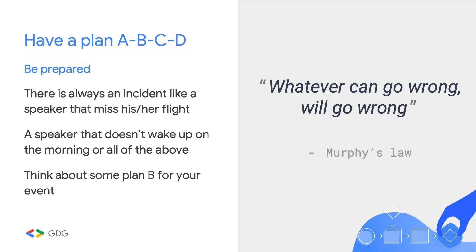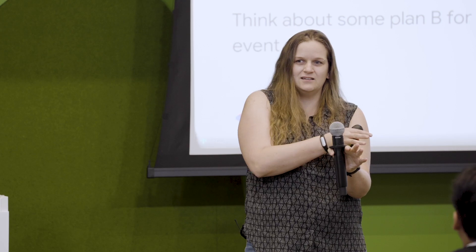Make sure to have plans A, B, C, and D for your event, because everything that can go wrong will go wrong. Speakers don't wake up, miss flights, or miss something. Try to have a talk ready yourself as a backup. Keep backup speakers on standby. If you have two tracks and a speaker cancels, you can merge everyone onto one track. Think through all the things that can go wrong before the event, and with all that preparation, you can have great content and great speakers.